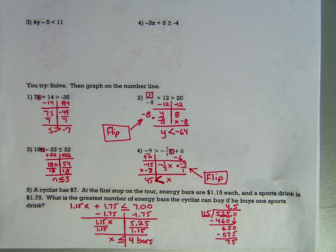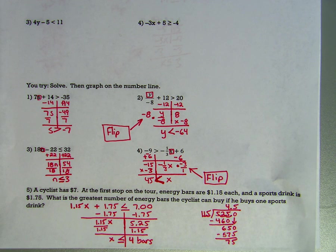Number 2: subtract 12 first, bring down y divided by negative 8, and multiply by negative 8 on both sides. Since we're multiplying by a negative, flip the inequality — it's no longer greater than — and y is less than negative 64.